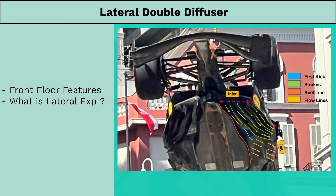The front floor basically comprises four features. First, the front floor outwashing strakes, marked in green. Second, the front floor kick where there is a local drop in static pressure — this kick acts like the throat of a diffuser, marked in blue. Third, the expanding configuration of the keel and the innermost strake: if you look at the orange line and the innermost strake (the green line), you have an expanding configuration that in itself acts like its own diffuser. And fourth, the floor edge winglets, which are very distinctive on the RB19.